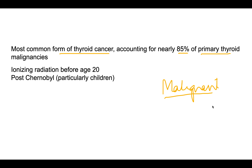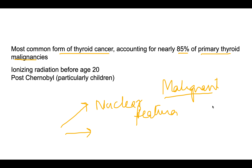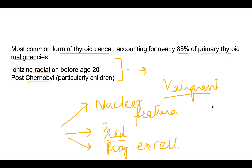There are three important things about papillary carcinoma. First, diagnosis is always made on nuclear features, which we will discuss in the morphology section. Second, there is a predisposition in persons exposed to ionizing radiation — for instance, after the Chernobyl incident, those exposed before age 20 had an increased risk. Third, its prognosis is very excellent, unlike most malignancies.